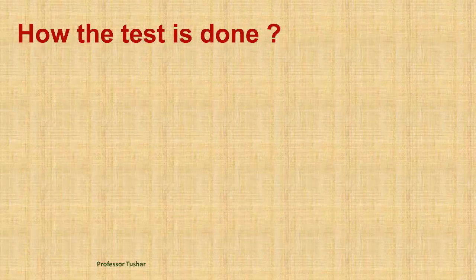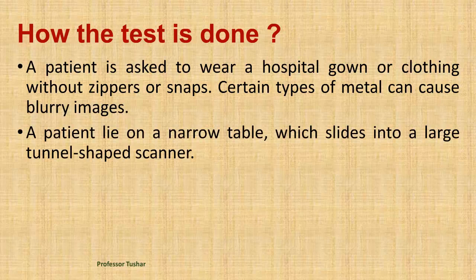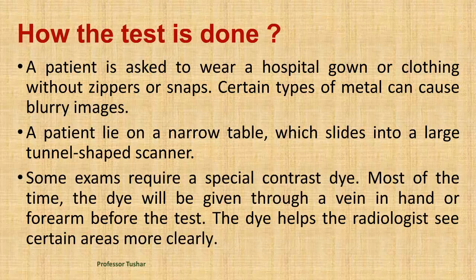How the test is done: A patient is asked to wear a hospital gown or clothing without zippers or snaps, as certain types of metal can cause blurry images. The patient lies on a narrow table, which slides into a large tunnel-shaped scanner. Some exams require a special contrast dye, which is given through a vein in the hand or forearm before the test. The dye helps the radiologist see certain areas more clearly.